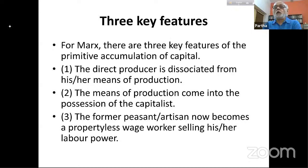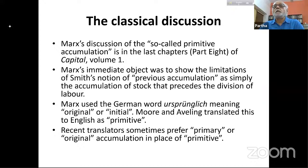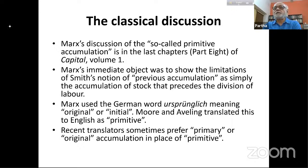We went through the history of how this term primitive accumulation came into circulation in the English version of Capital Volume 1, because it refers to Adam Smith's discussion of how factory production — that is to say capitalist production — actually originates or begins. Smith called this the previous accumulation. Stock here means stock of capital, that is to say money, wealth — not shares in the stock exchange, which was still in its very origins at the time Smith was writing.